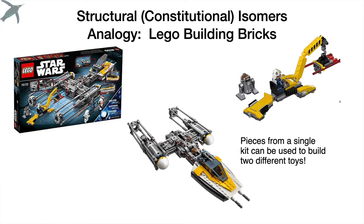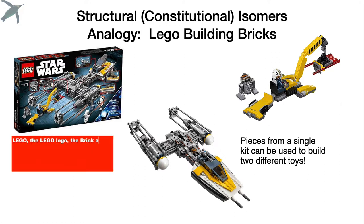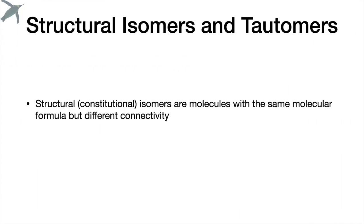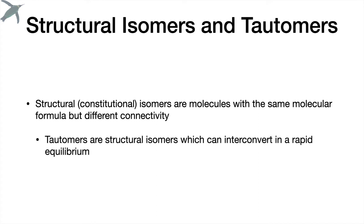Here's a quick analogy. We're going to look at building bricks. You know how sometimes you get a kit and you can build two different toys from the same kit? That would be a great example of a structural isomer. So we've got it — different connectivity.